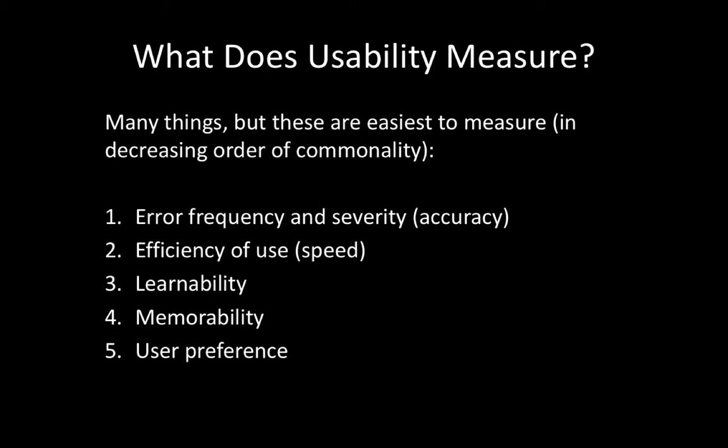You could have a system with a feature that increases errors, slows people down, is hard to learn and remember — and users love it. That happens a lot, certainly not the majority of the time, but it's not uncommon. Even if it's not directly contradictory, it's really important to hear what users like and what they want to see. If users really like a feature, it's probably a good idea to include it.